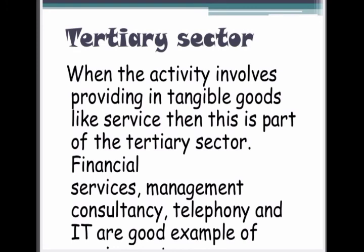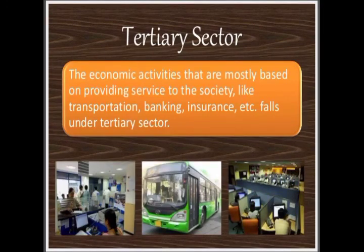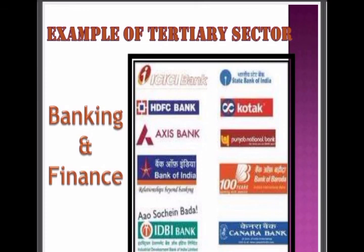This shows that the tertiary sector is correlated with both the secondary and primary sectors. For example, sugarcane comes from the primary sector, is sent for manufacturing and processed into sugar. After sugar is made, you cannot keep it only in the mill — you need to bring it to the market, to the godown. The transportation service provided here is part of the tertiary or service sector. From the name itself we can understand: service is being provided, and for service we pay a fee. Insurance, banking, transportation, and warehousing — all of these come under the service sector.